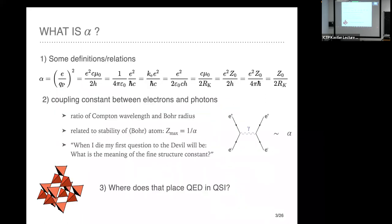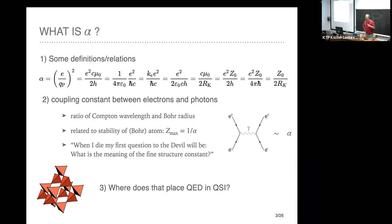The fine structure constant is of course 1 over 137 in QED, famously. Pauli is said to have said that when he dies, his first question to the devil will be: what is the meaning of the fine structure constant? So even at the end of this talk you will not know what the meaning of the fine structure constant is, but I'm going to try to tell you what its value is in an emergent system. One perhaps very physical definition is the ratio of the Compton wavelength to the Bohr radius.